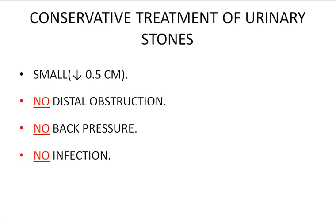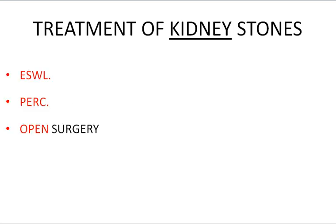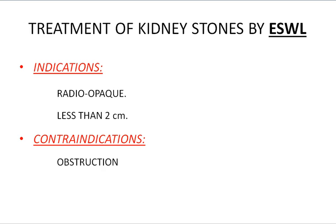Interventional treatment of urinary stones depends upon the site of the stone — whether in the kidney, ureter, urinary bladder, or urethra. Treatment of kidney stones includes ESWL, PERC, or open surgery. ESWL may be indicated for radio-opaque stones less than 2 cm in diameter. It cannot be attempted if distal obstruction is present because ESWL induces fragmentation of the stone, necessitating patency of the distal urinary tract to permit passage of the resulting gravels.